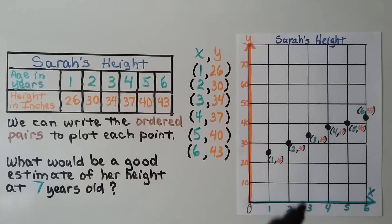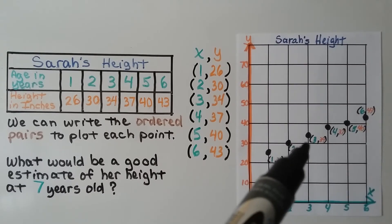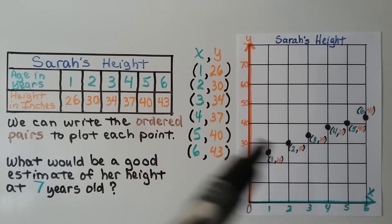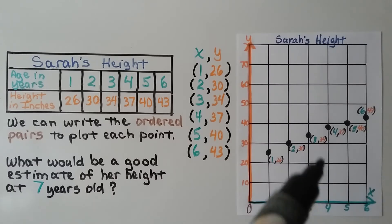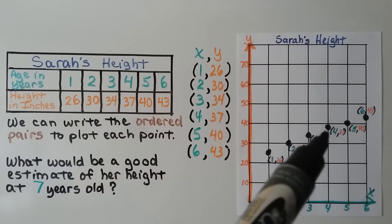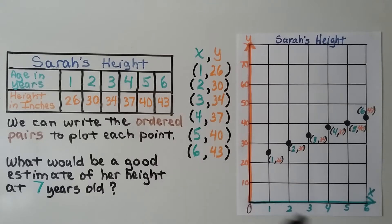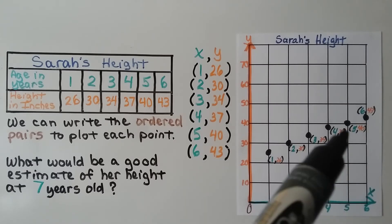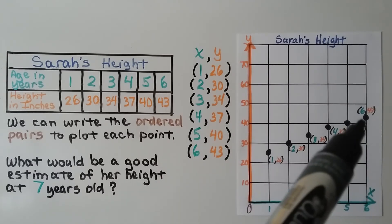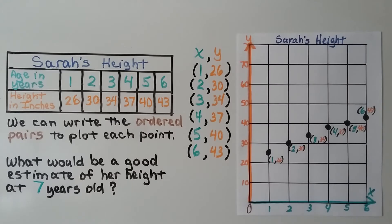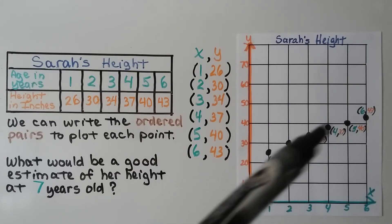At three, she was 34 inches, so we have it between 30 and 40. At four, she was 37 inches, so we have it just below 40. At five, she was 40 inches. At six, she was 43 inches. We can see she's growing.